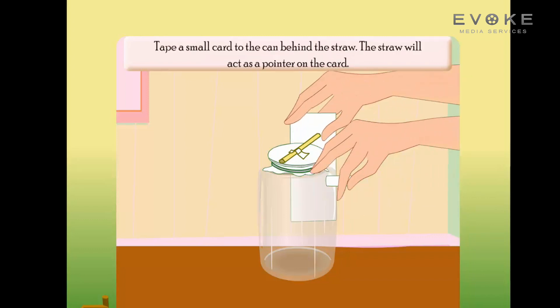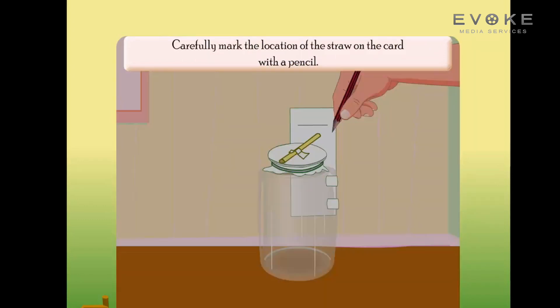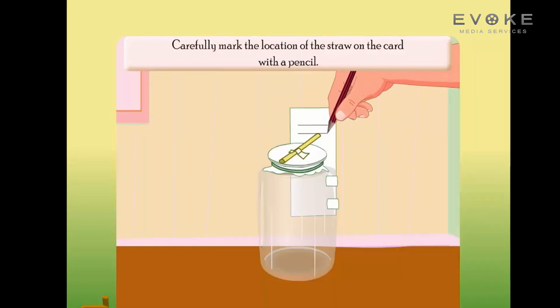Tape a small card to the can behind the straw. The straw will act as a pointer on the card. Carefully mark the location of the straw on the card with a pencil.